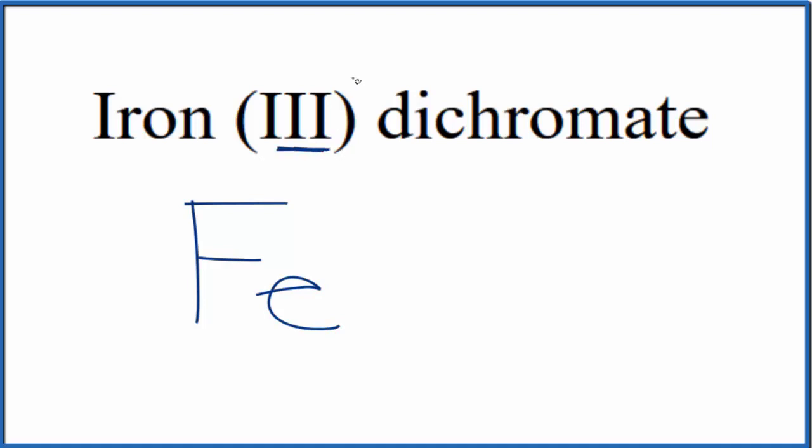That three, this three right here in the parentheses, the Roman numeral three, tells us that iron is going to be three plus. The dichromate, when you see this dichromate here, it ends in A-T-E. That means it's a polyatomic ion.